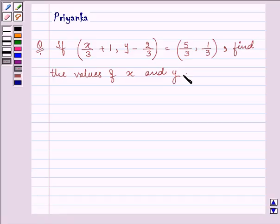Here, in this question, we'll use the definition of equality of two ordered pairs. For example, if (a, b) is equal to (c, d),